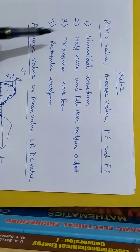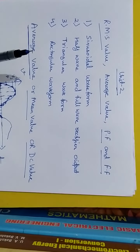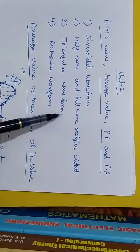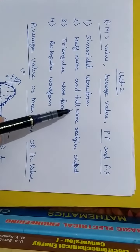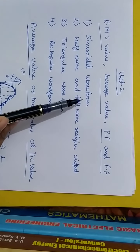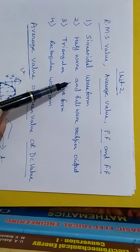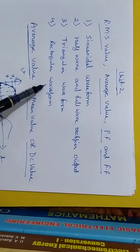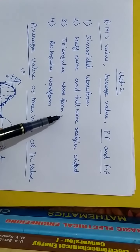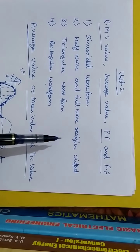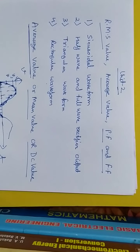In this video I will particularly discuss these waveforms: first is the sinusoidal waveform which you already know, then I will calculate the RMS value and average value of half wave, full wave, triangular wave, and rectangular waveforms. These are the waveforms which were asked in questions to calculate the RMS value and average value.